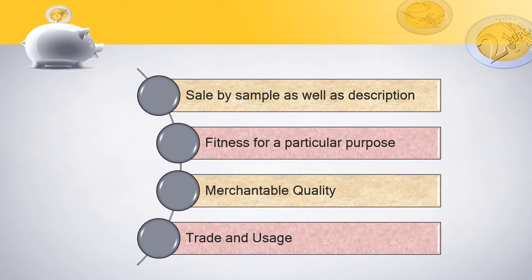Exception 6: Fitness for a particular purpose. If the buyer has purchased any goods for a fitness purpose and those goods are not serving that purpose, the buyer has a right to claim for damages or return the goods. Exception 7: Merchantable quality. If the buyer relies upon the seller as to the merchantability of the goods and the goods are not of merchantable quality, the buyer can return the goods to the seller. Exception 8: Trade and usage. If goods purchased for trade or usage are not as per trade and usage criteria, the buyer can return the goods and the seller will be held responsible.